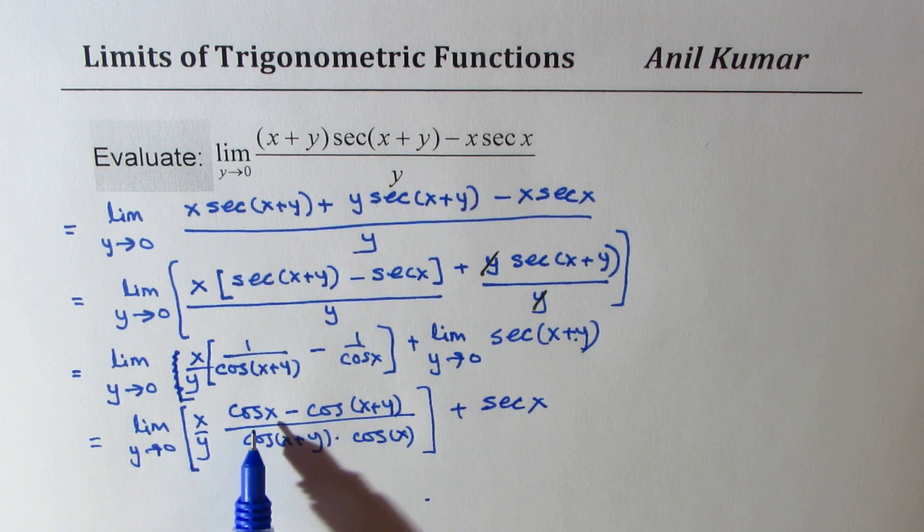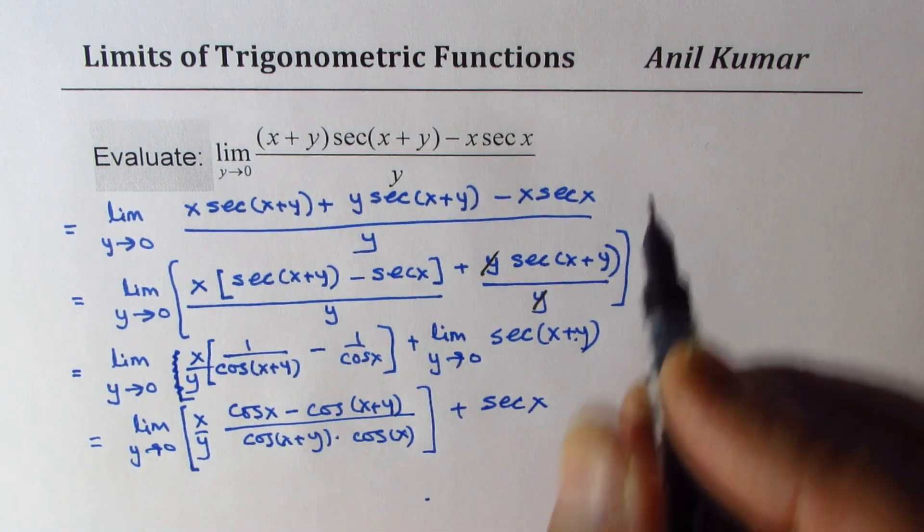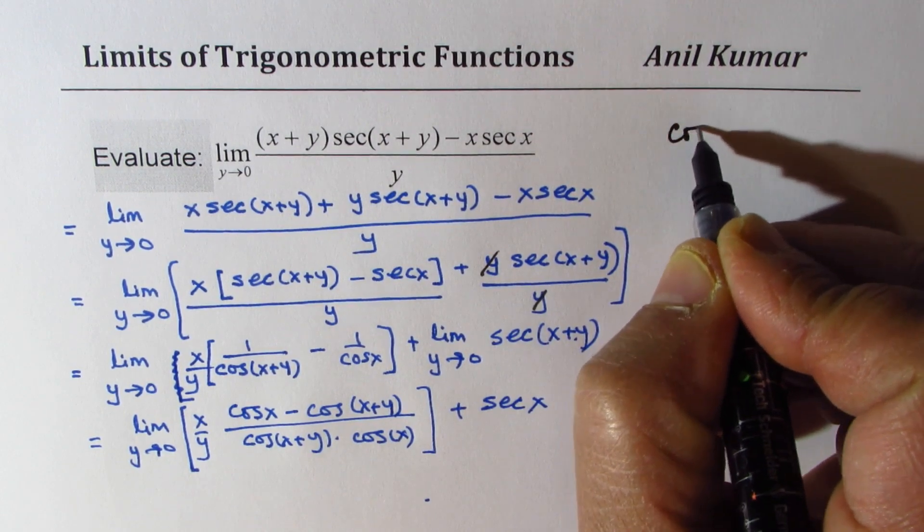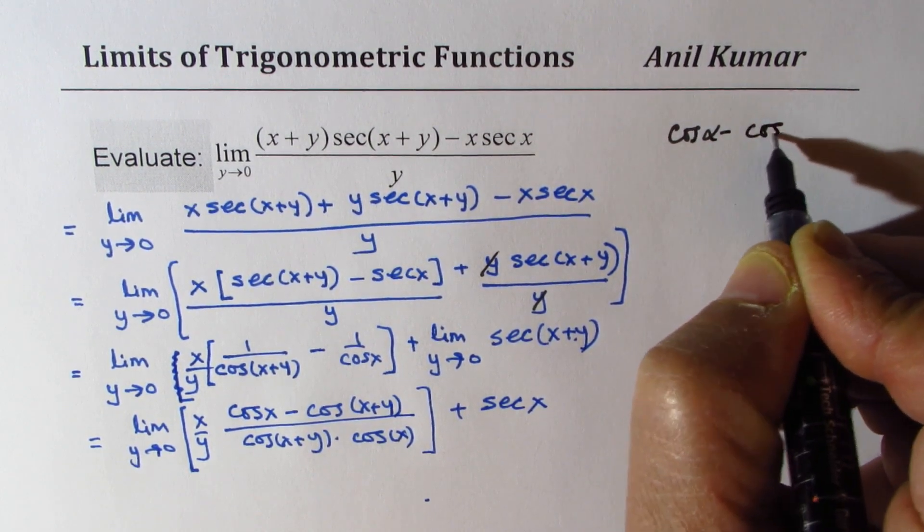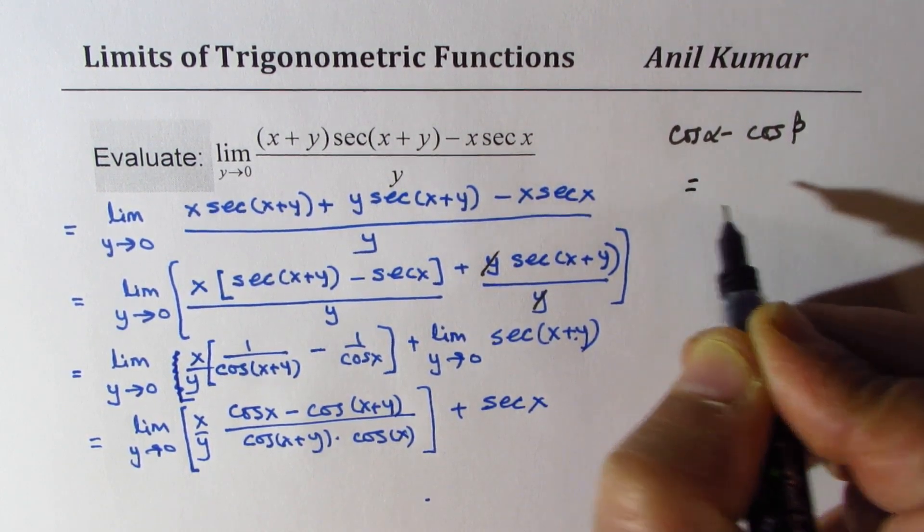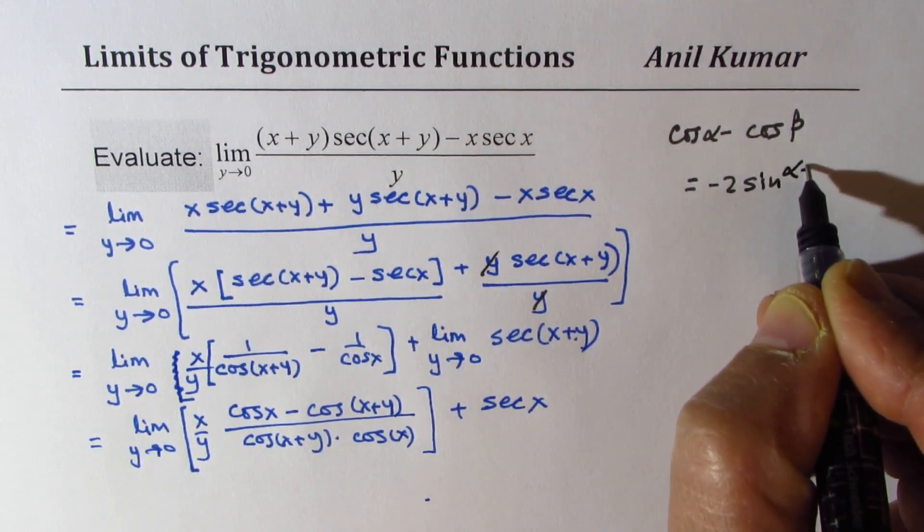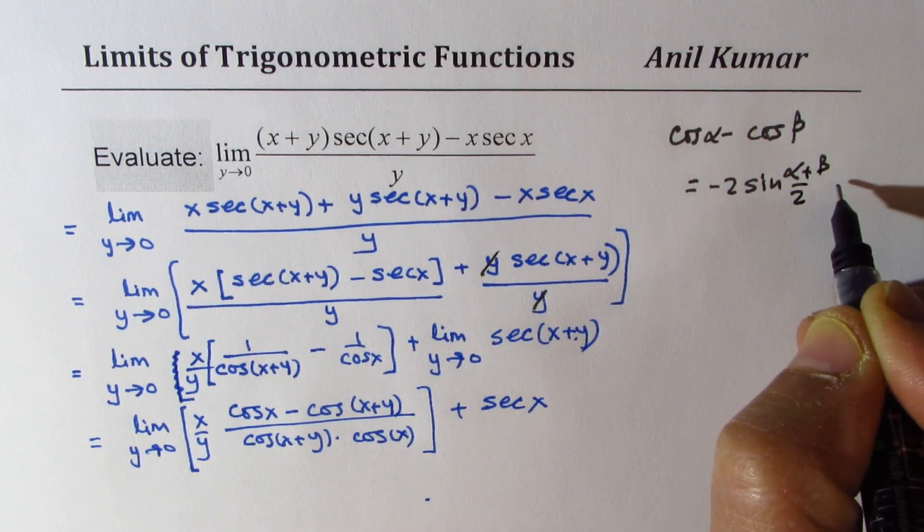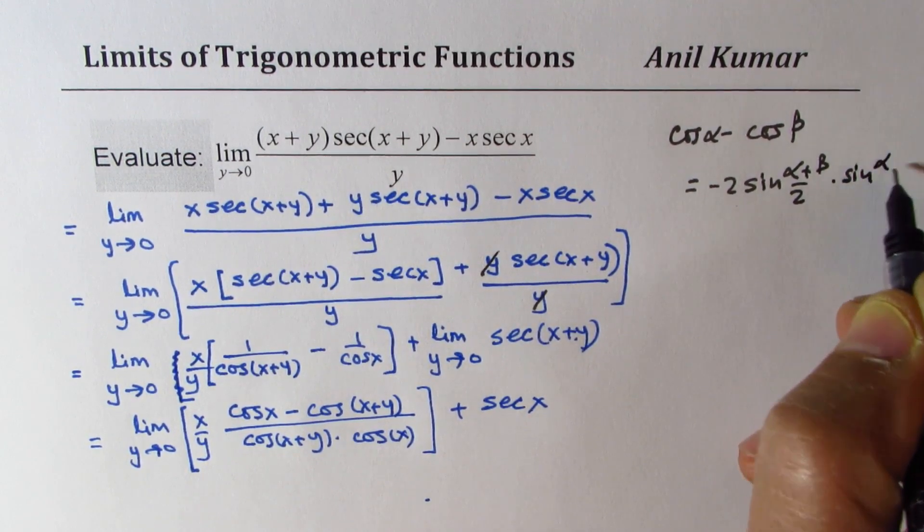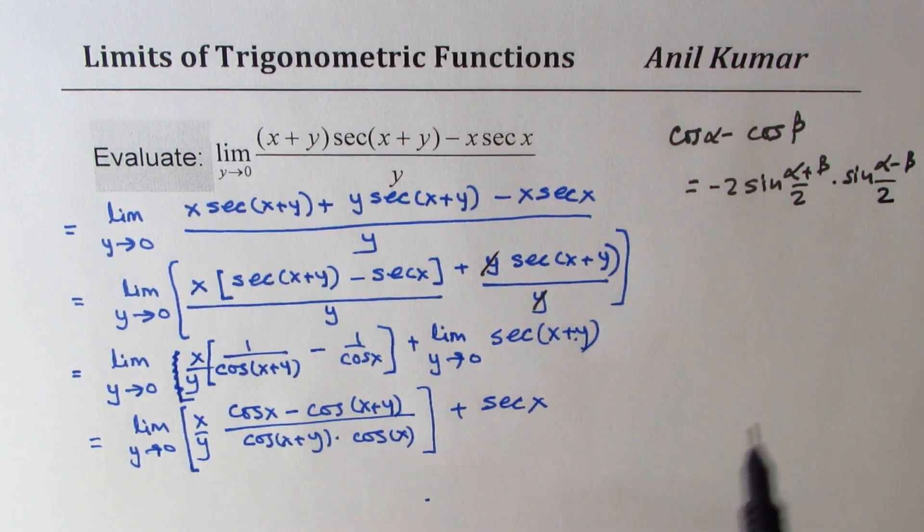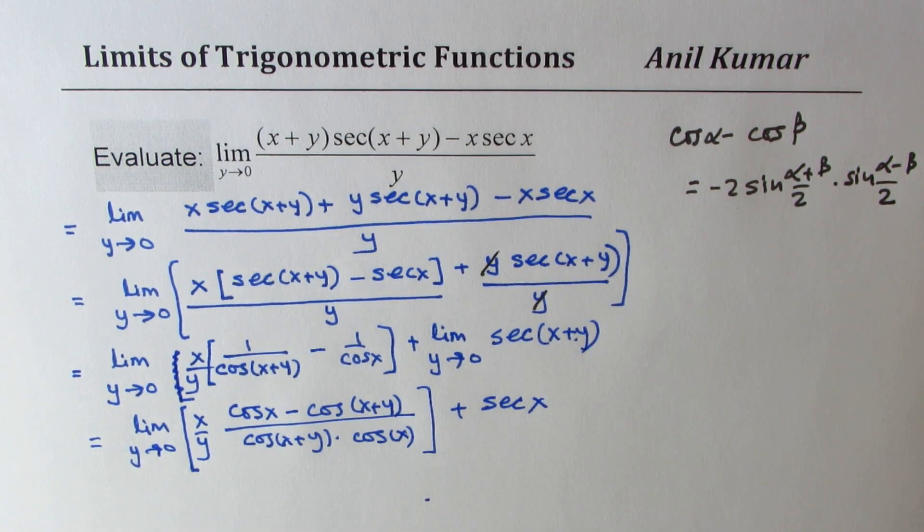Now here we have difference of cos. So we could apply the formula which is cos alpha minus cos beta equals to minus 2 sin alpha plus beta by 2 times sin alpha minus beta by 2. So we'll convert this into sin terms.